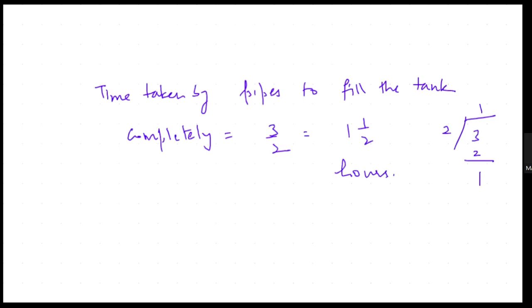Question Number 14 says: A, B, and C can do a piece of work in 6, 8, and 12 hours respectively. They started the work together and after one hour, B left the work. In how much time will the remaining work be completed by A and C? So A, B, and C can complete the work in 6, 8, and 12 hours. After one hour B left, and we need to find how long A and C take to finish the remaining work.